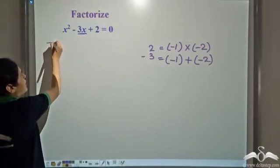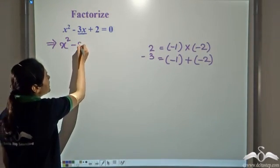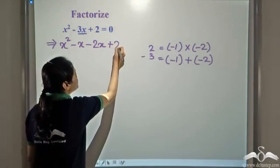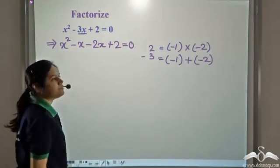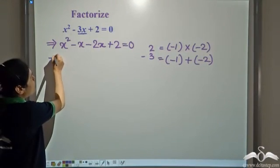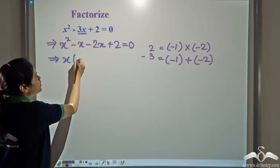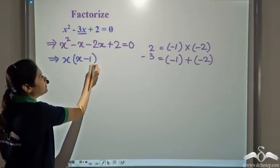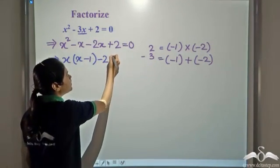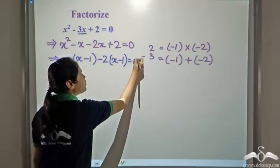So we can split the middle term using these two numbers. This gives us x squared minus x minus 2x plus 2 equals zero. Now, from the first two terms, take x common, giving x into x minus 1. From the next two terms, take negative 2 common.